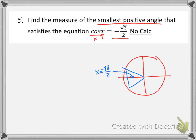So I want this one and this one, but I really only want this one here because we wanted the smallest positive angle. This one is 5 pi over 6. That's our answer.